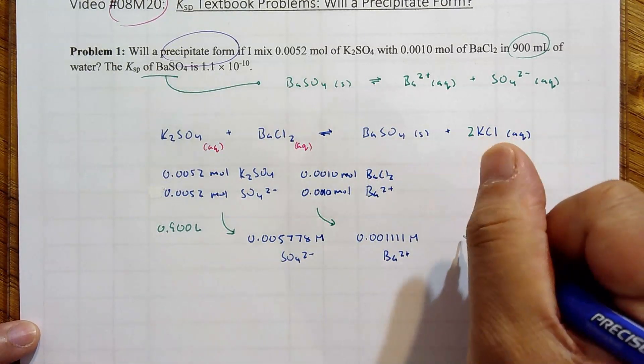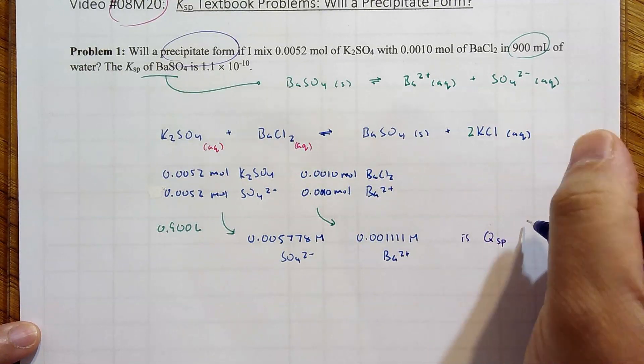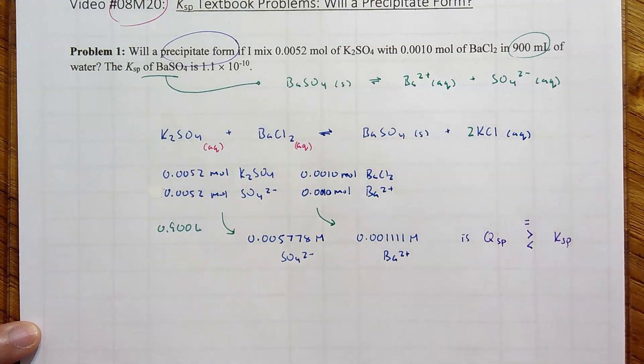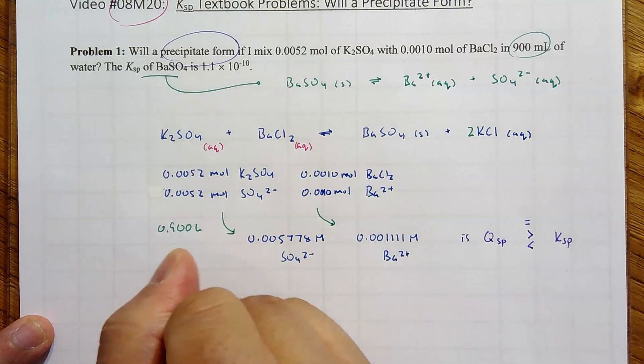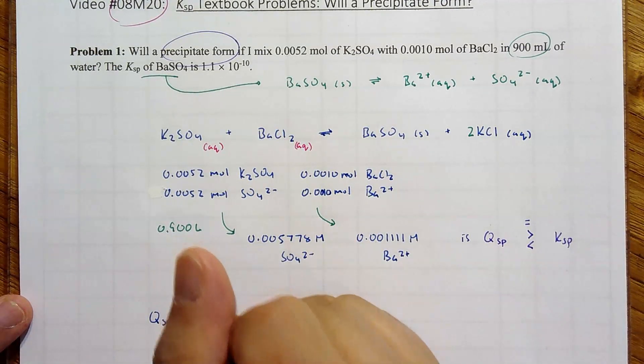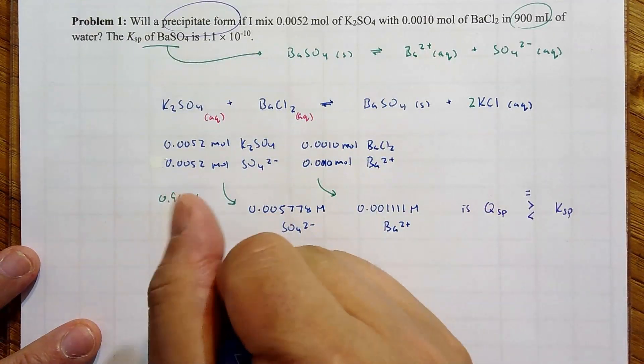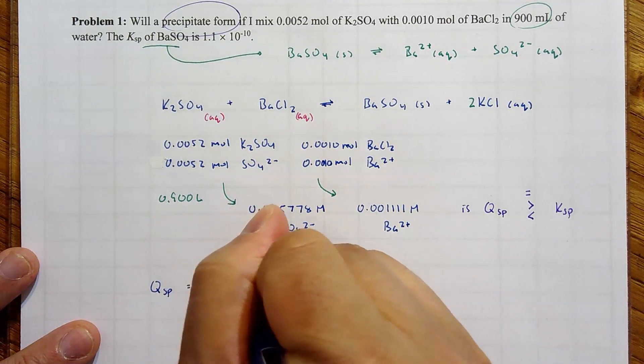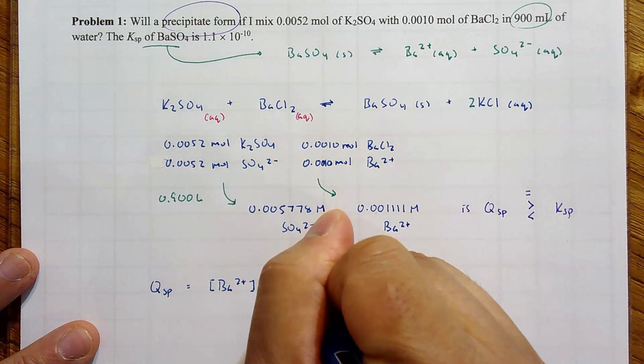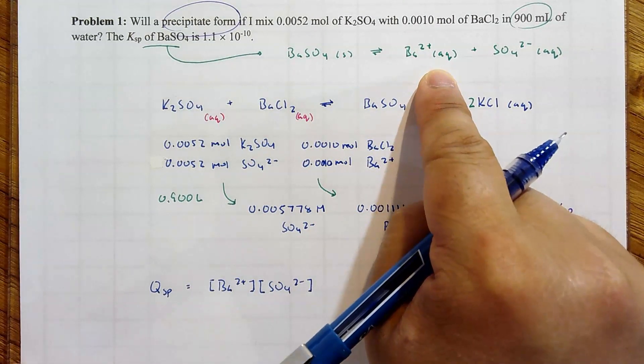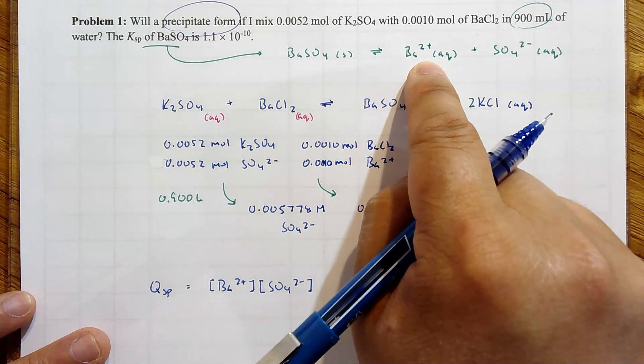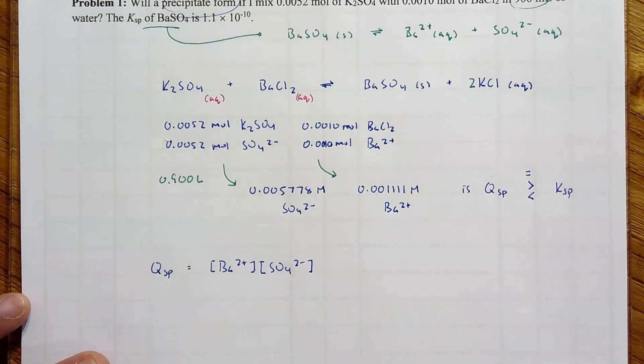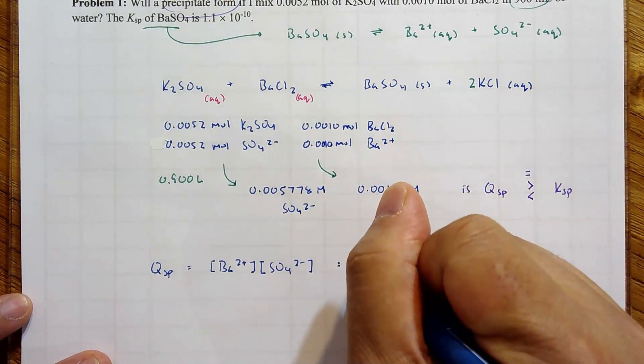Because right now we can assume that this is not at equilibrium, not at the Ksp. So do you see what I'm hinting at? We want to do a Q evaluation. Is Qsp equal to greater than or less than Ksp? So we're not writing the equilibrium solubility product constant expression. We're going to take the Q analog of it. But it's still the same thing. Now we're looking at this equation right here. It is the concentration of Ba²⁺ times the concentration of SO4²⁻. Neither of these have a coefficient, because if barium 2 plus had a coefficient of 2, 2Ba²⁺, then you would square that concentration.